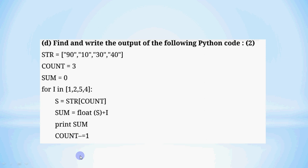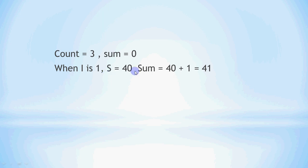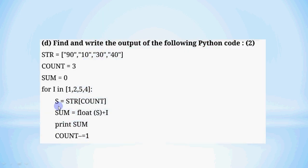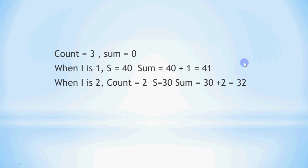We have count = 3 and sum = 0. When i is 1, s is equal to str[count], and count is 3, so str[3] is '40'. Then float(s) converts '40' to 40.0, and 40.0 plus i (which is 1) gives 41.0. It will print 41.0, and then count decreases by 1 to become 2.